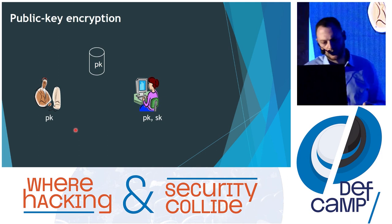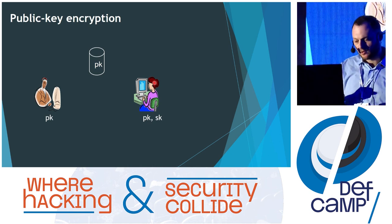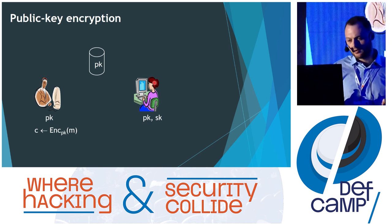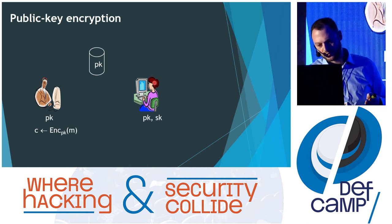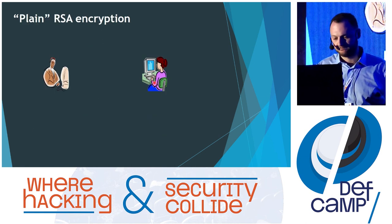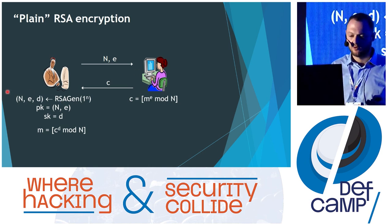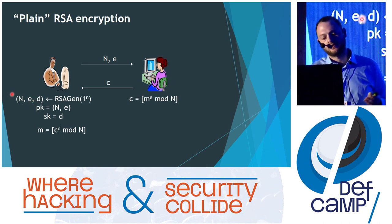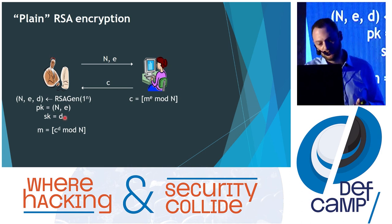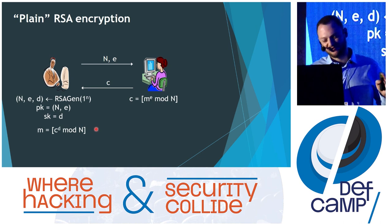Afterwards we got the revolution of public key encryption. Alice generates two keys — the secret one and the public one. She stores the public key in some public repository, and Bob takes it and encrypts the message. Everybody can encrypt the message, but only Alice can decrypt it because she has the secret key. RSA is an example of a public crypto system: Bob generates the key where n is a product of two prime numbers, the public key is n, and he gives it to Alice to encrypt the message, and then Bob decrypts it.